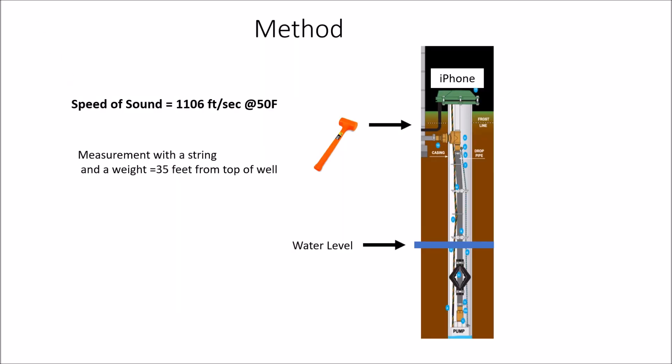So what we're going to do is strike the steel casing around the well with a dead blow hammer. We're going to produce a sound that the iPhone picks up and will travel down the well, bounce off the water level and come back up and hopefully the iPhone will be able to detect it. By knowing the speed of sound in this case 1106 feet per second at 50 degrees F we should be able to measure the time it takes to go down the well and come back up. At least that's the theory.